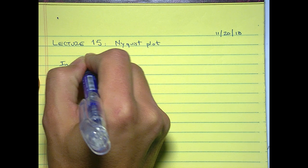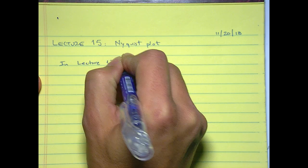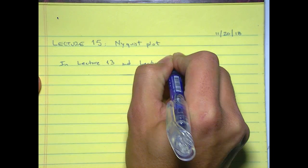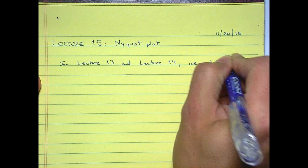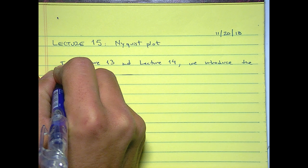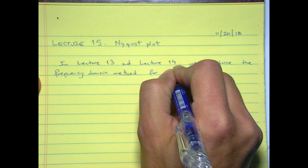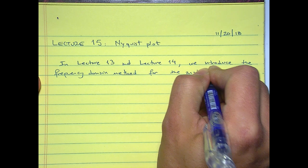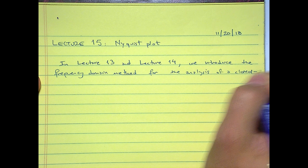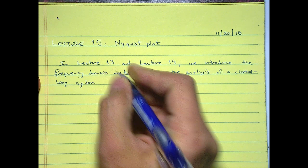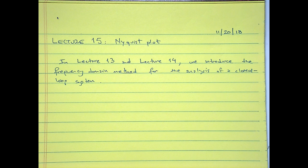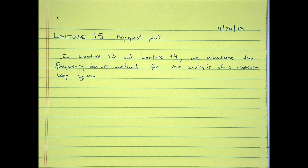In lectures 13 and 14 we introduced the frequency domain method for the analysis of a closed-loop system. The idea was to evaluate the Laplace variable at only the imaginary part and study the magnitude and the phase. In lecture 14 you saw a method to determine stability from it — those were a particular case.